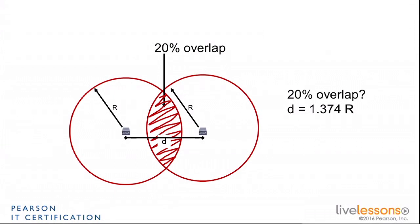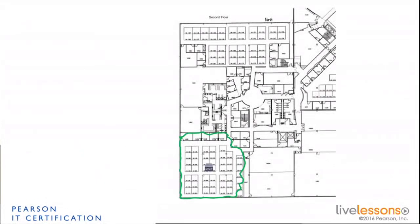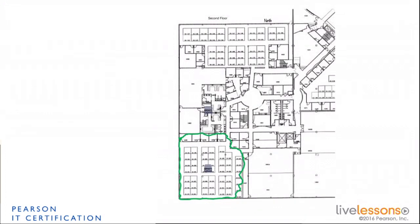That 1.374 multiplier is for 20% overlap, which is common for voice. You'll also find about 10% overlap for data, which has a different ratio. If you have a more aggressive coverage with only 15% overlap and still want to do voice, that's another equation. You can find more numbers and equations online, but most people use 1.4 as an average, which gives between 15% and 20% overlap, and simply use that as the distance to the next access point.